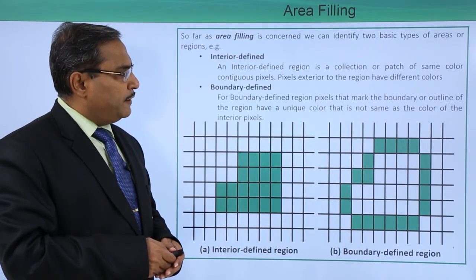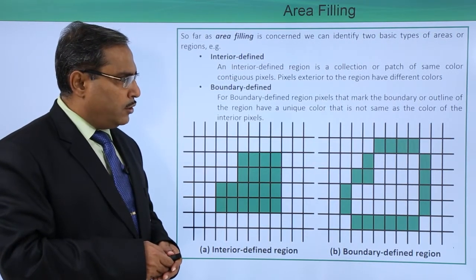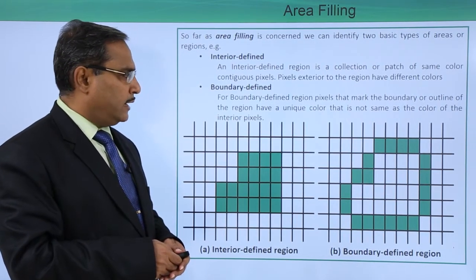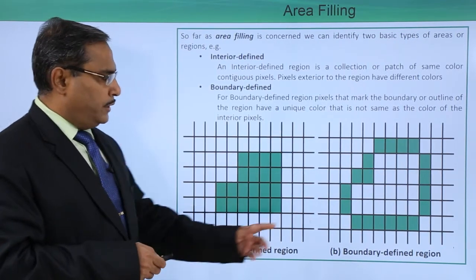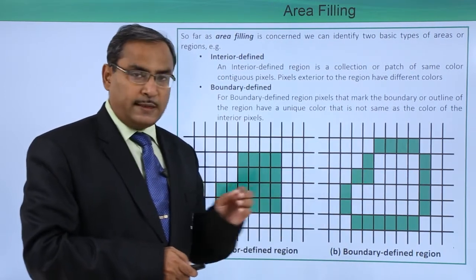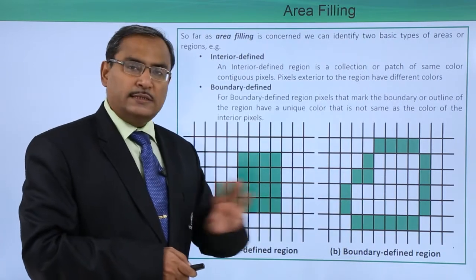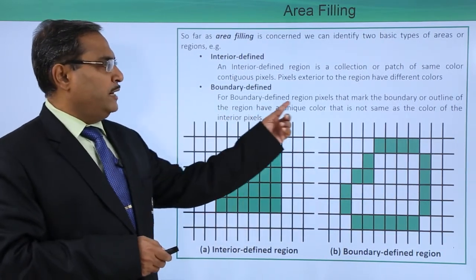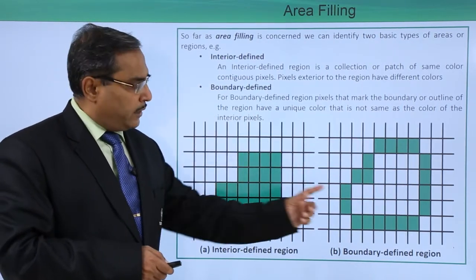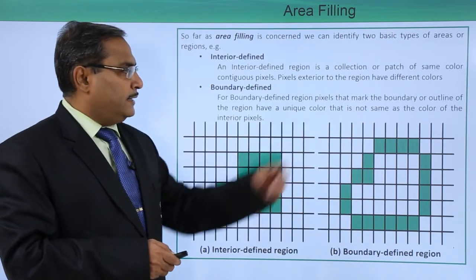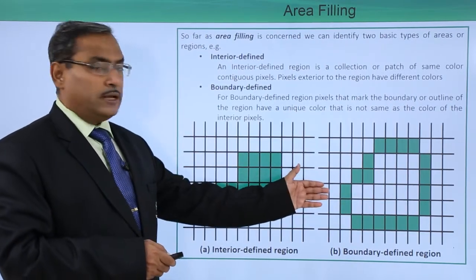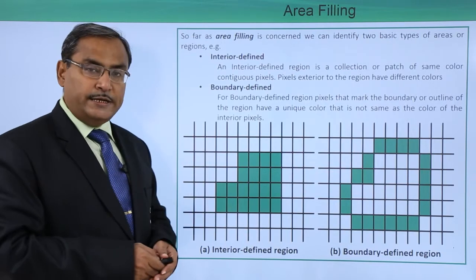The next one is boundary defined. For a boundary defined region, pixels that mark the boundary or outline of the region have a unique color that is not the same as the color of the interior pixels. As shown here, the boundary pixels have a certain color and the interior pixels have a different color. So this is known as boundary defined, and the previous type is known as interior defined.